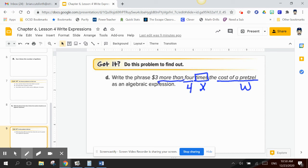And what am I going to add to that four times the cost of the pretzel? That's three. So, to do my multiplication first, I have 4W plus the $3. Why do I do my multiplication first? Because in the order of operations, multiplying comes first before addition.